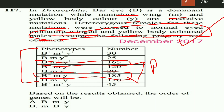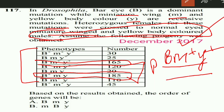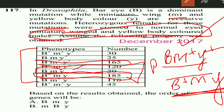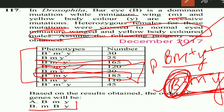Now we have to find the double crossover type. In double crossover, only the middle gene is swapped, and by this we can determine the order of genes. The lowest number given is the b, m, y type, that is 20. In the double crossover type, m and y are in common but only b+ gene is changed. That is why b is in the middle, and the gene order is m, b, y.